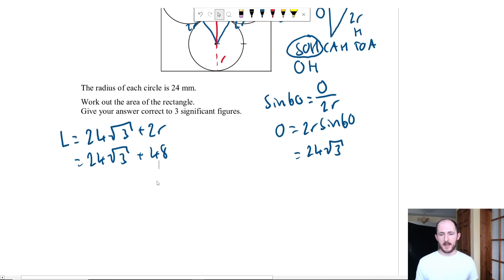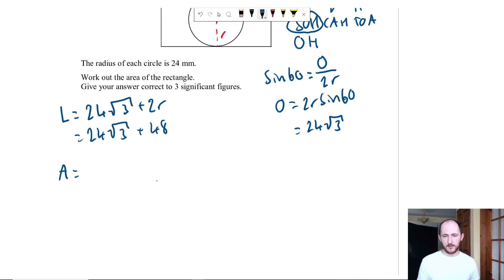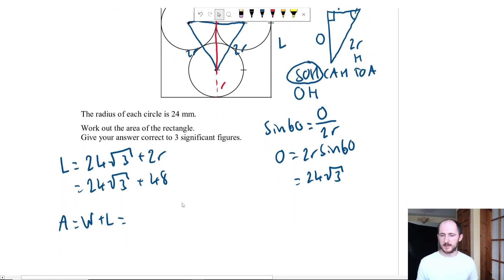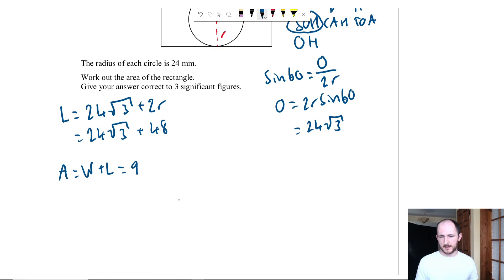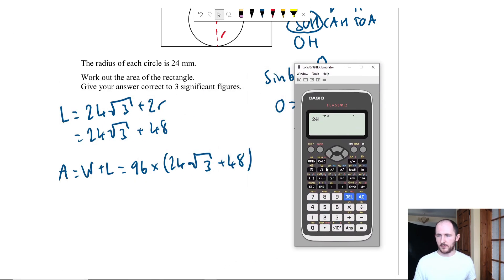So I'm going to leave it like that and the area is just going to be the width times the length. The width we really worked out was 96 millimeters so we've got 96 times and then this whole thing here. The reason why I've left it in terms of surds is just because then I have a more accurate answer but as a little tip what you could do is write this into your calculator so 24 root 3 plus 48 and then literally just save the decimal in your calculator and then just do times 96 and that'll also give you the same answer and it gives me this number here which is our area.